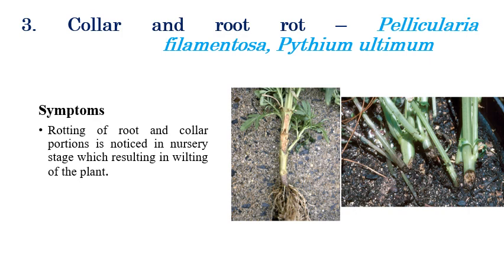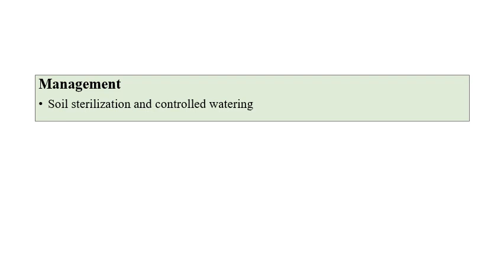Collar and root rot is caused by Pellicularia filamentosa and Pythium ultimum. Rotting of the collar and root portions can be seen, especially in nursery stages. In later stages, wilting of plants can also be observed. Management includes soil sterilization and avoiding over-watering.